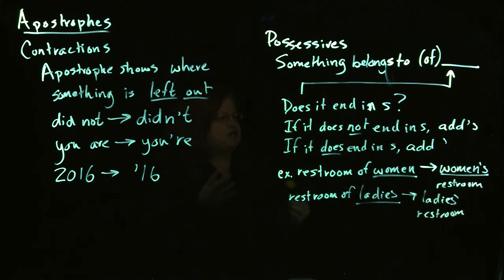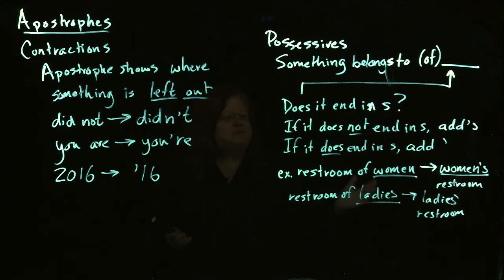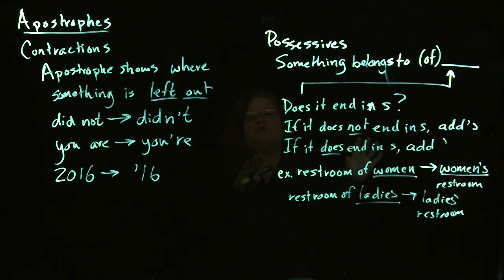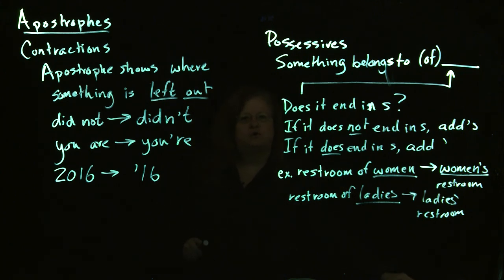This is something I see a lot of times, especially in newspaper ads — clothing ads in particular. I'll see ads for 'ladie apostrophe S' clothing, L-A-D-I-E apostrophe S. What that would mean is that it's a restroom of 'ladie,' L-A-D-I-E, which isn't even a real word. So this is one of the things to look at — don't worry about anything else. Just look at what you have: does it end in S? And formulate your possessive accordingly.